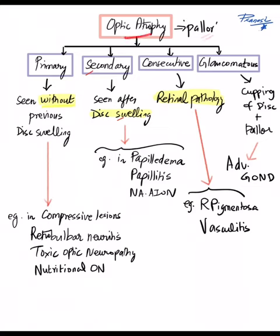Let's understand optic atrophy, which is characterized by pallor of the optic disc. There are four types of optic atrophy.